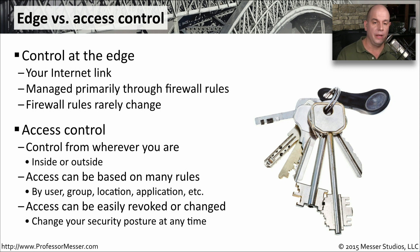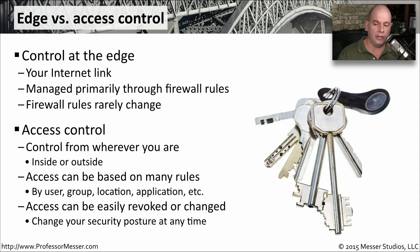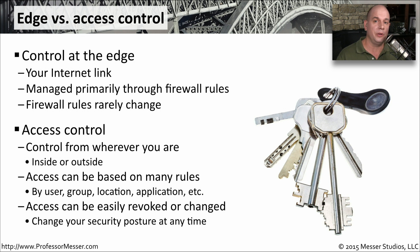Other types of access control might be more formalized. You may have access control that is able to allow or disallow traffic depending on anywhere you might happen to be. It can be based on rules — if you're a particular user or a member of a particular group, we can allow or disallow access that way. This access control is usually managed from a central point and can change or modify what your access control might be at any time. It can examine the security posture of your device, and if your disk encryption or antivirus was disabled, it can change your ability to access different parts of the network.